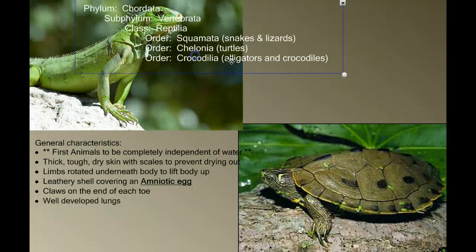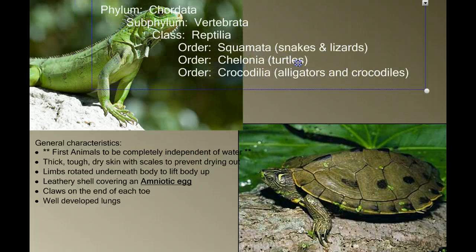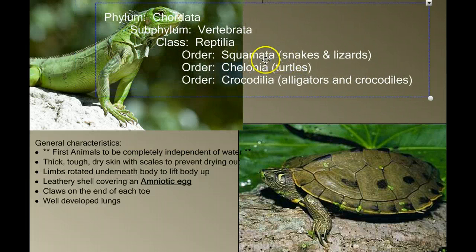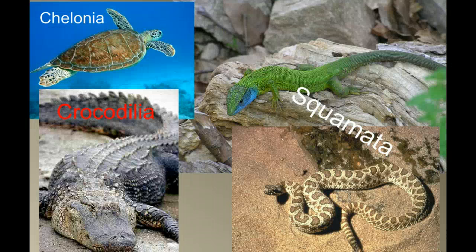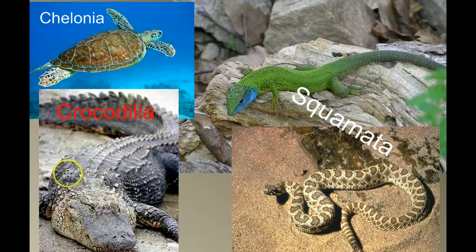In the class Reptilia, there are four orders; we're going to study three of them: order Squamata, Chelonia, and Crocodilia. The Squamata include the snakes and the lizards. The Chelonia are the turtles and tortoises. And the Crocodilians include the crocodiles and the alligators.